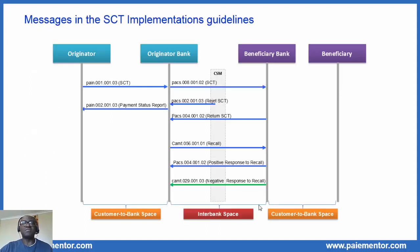Let's begin with the overview of the messages that are found in the SEPA Implementation Guidelines document. The CAM-29.1.3 is highlighted in green color below. It is sent by the beneficiary bank to the debtor bank, and that's always the case in the SEPA Credit Transfer Scheme. The CAM-29 is always generated and sent by the beneficiary bank to the debtor bank. So if you work on receiving a CAM-29, then you must be on the debtor bank side.